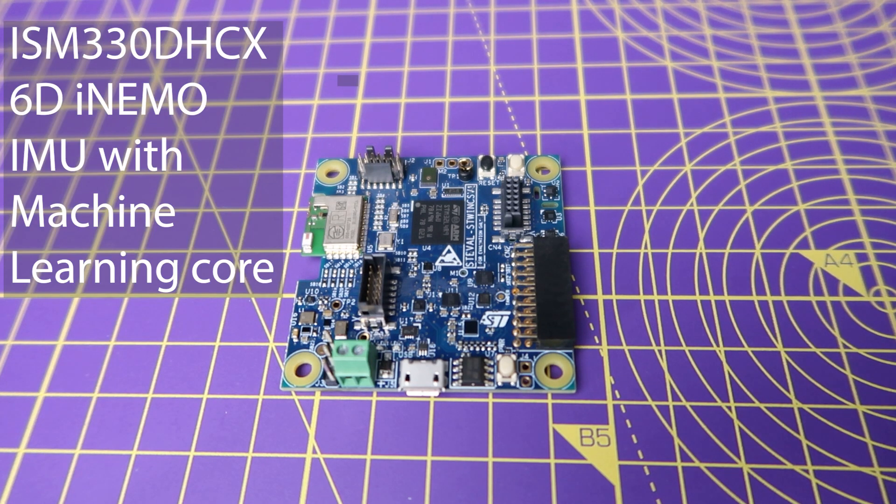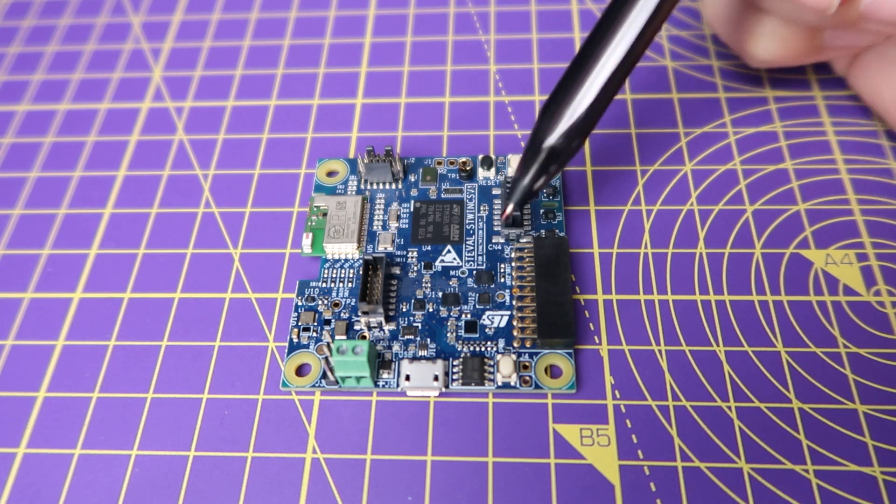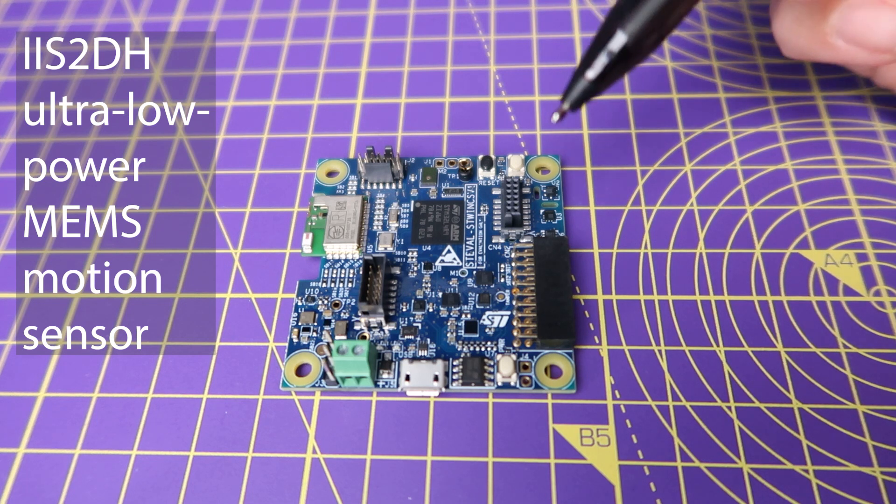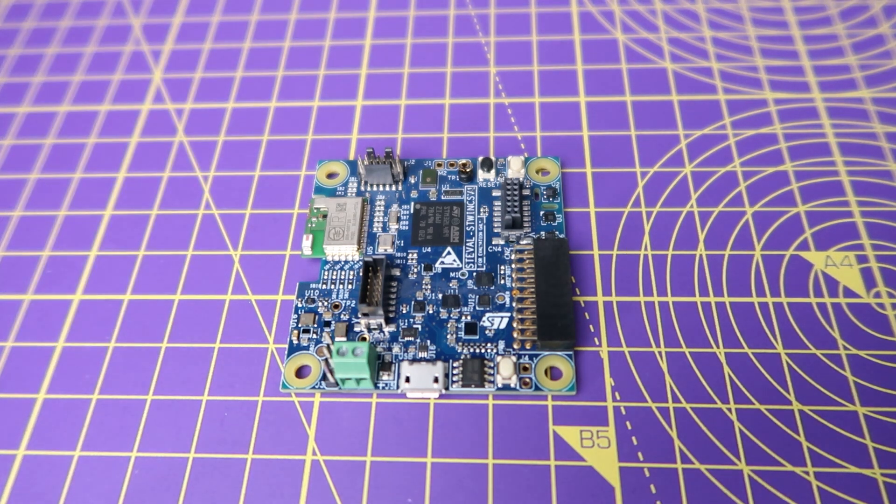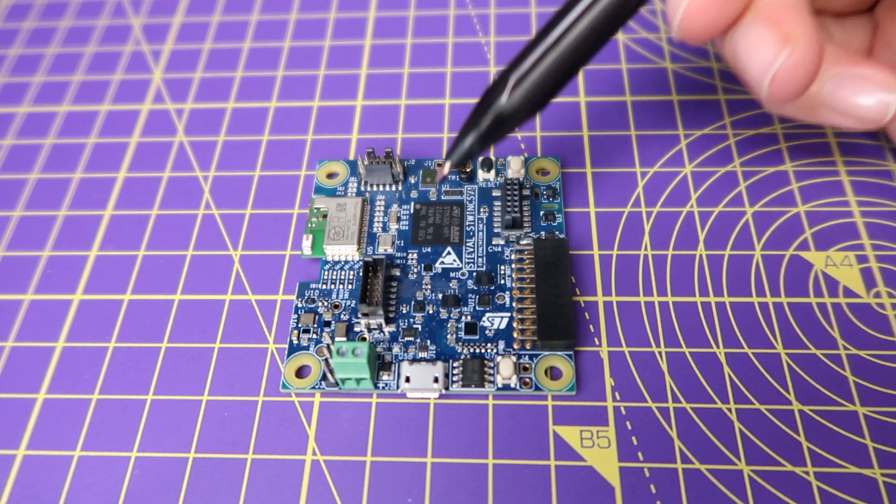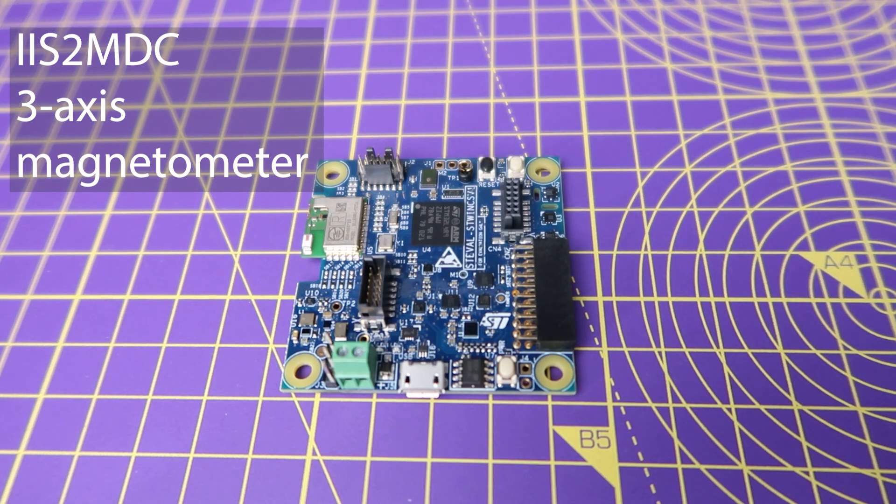It also features the ISM330D-HCX iNemo inertial measurement unit with machine learning core, IIS-2DH ultra-low power high-performance MEMS motion sensor, as well as IIS-2MDC ultra-low power 3-axis magnetometer.